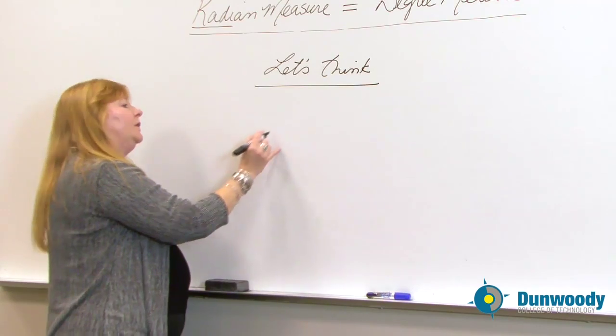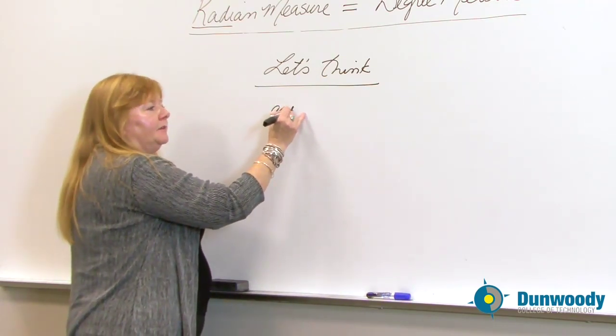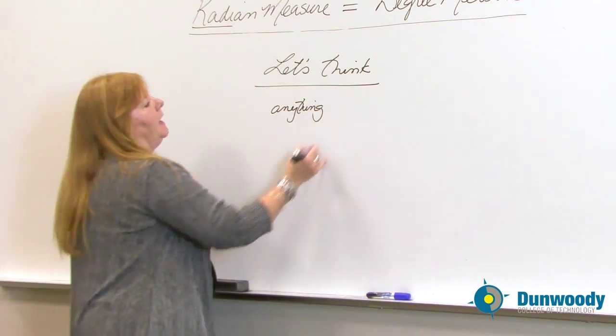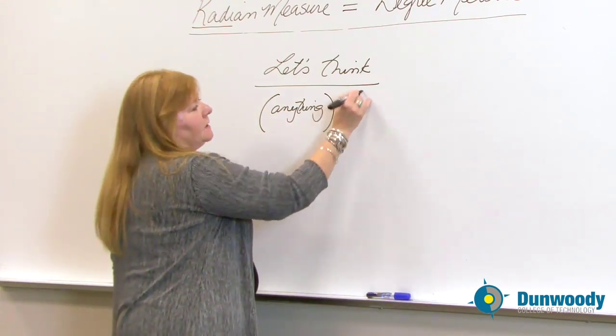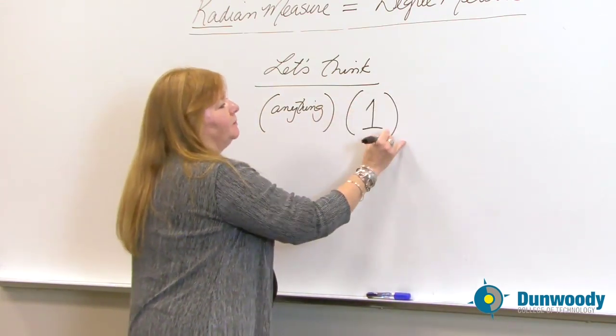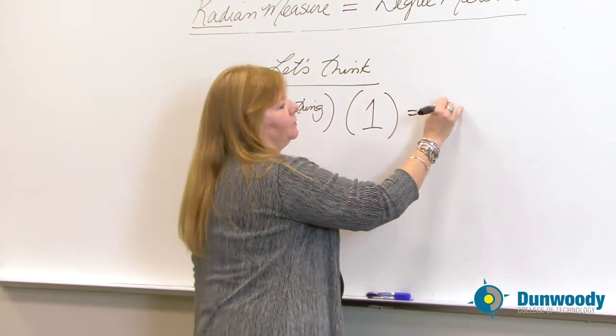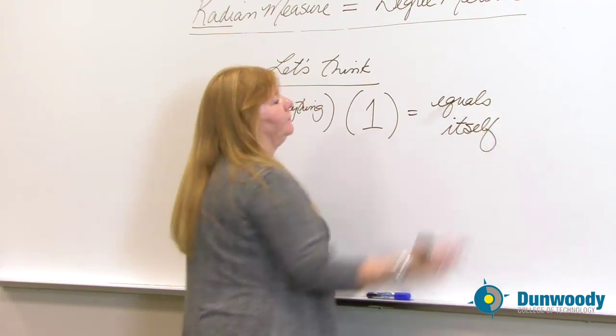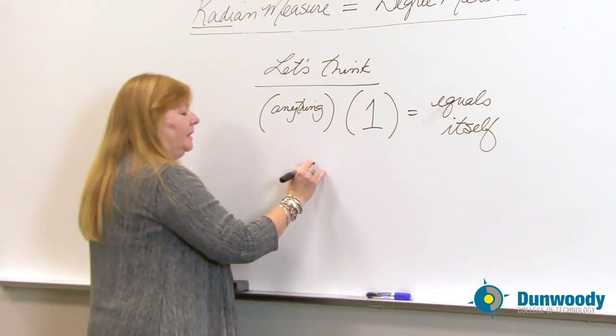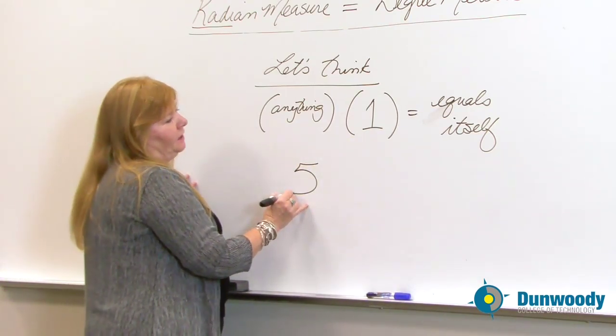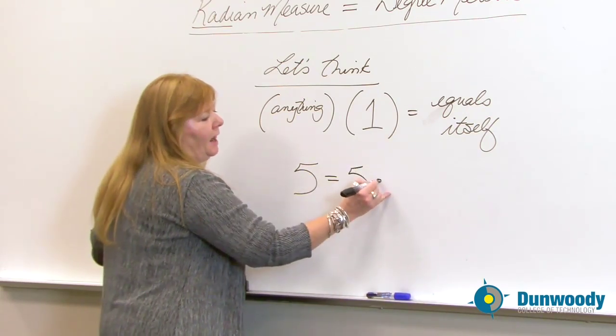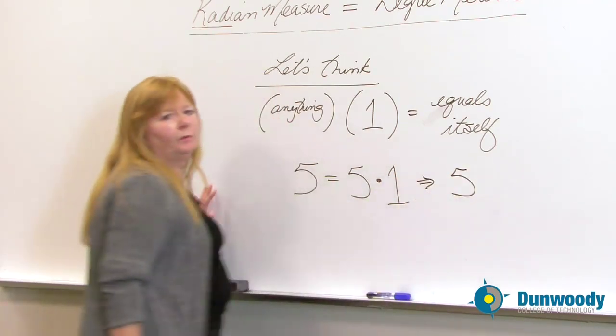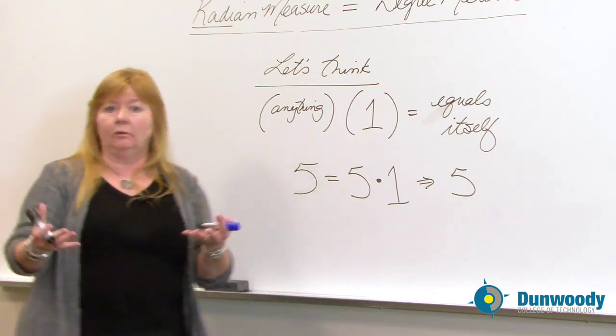Isn't it true that any number, anything, no matter how the number looks, anything times the number one is just simply equal to itself? I'm writing this out in words. So, for example, I can take a number and I can multiply it by one and I still have that number. Now, I know you're probably going, okay, I get that. Good. That's going to help you think.